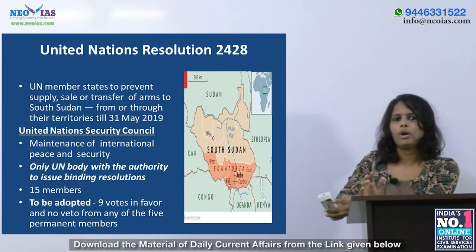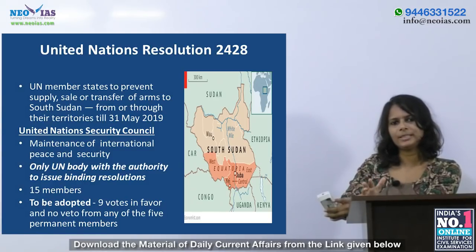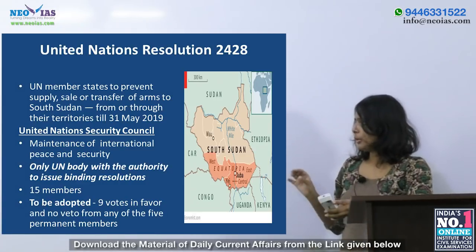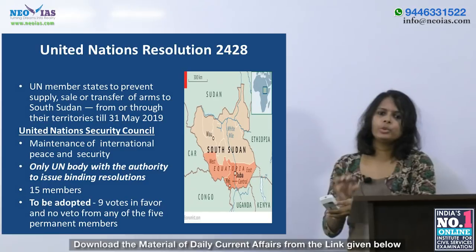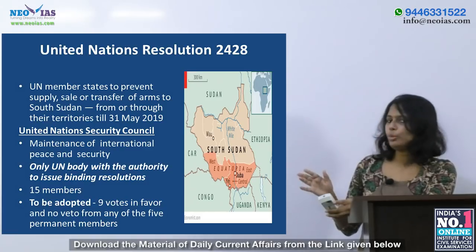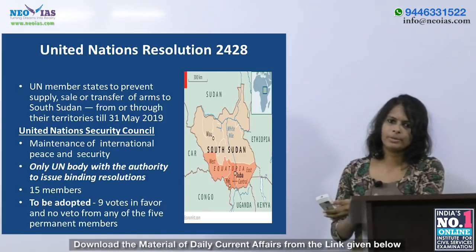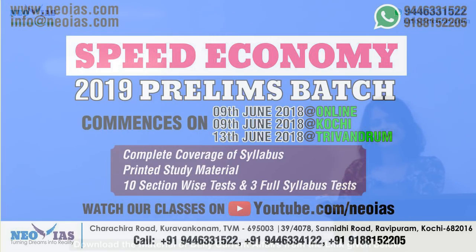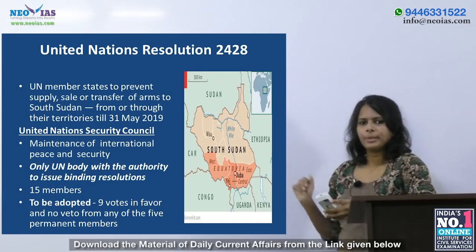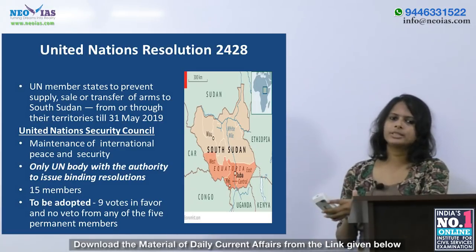The United Nations Security Council adopted this Resolution 2428. It is one of the principal organs of the United Nations and is in charge of maintaining international peace and security. An important point to note is that it is the only UN body with authority to issue binding resolutions. It consists of 15 members — 5 permanent members and 10 non-permanent members. The permanent members are Russia, UK, France, China, and USA, and these permanent members have veto power.